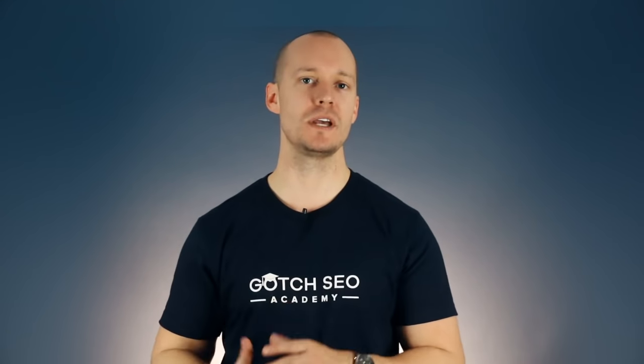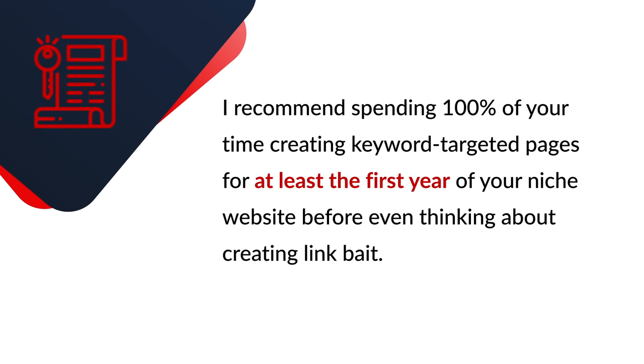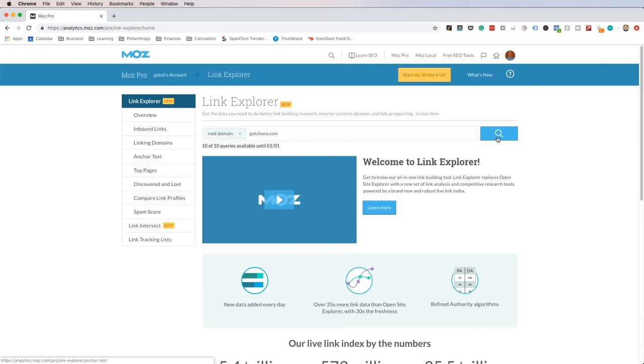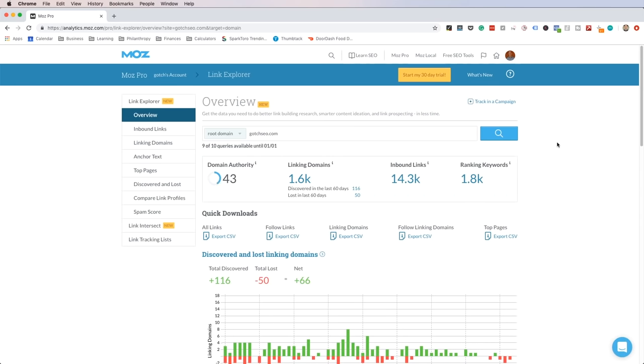The first question is: what is SEO content? There are two types of SEO content. The first is content that targets a specific keyword phrase — for example, if my target keyword was 'dog training,' I would create a page targeting that exact keyword phrase. The second type of SEO content is link bait. Link bait is a more advanced type of content and shouldn't be the focus in the beginning. I recommend spending 100% of your time creating keyword-targeted pages for at least the first year of your niche website before even thinking about creating link bait. Link bait is typically some type of asset that's designed to attract backlinks — these assets aren't usually keyword targeted, but they can be.